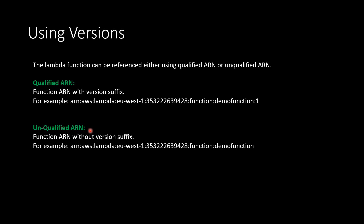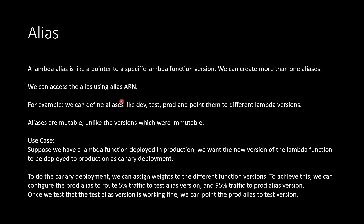Now the question is: what is the use of a Lambda version? The use of Lambda versions can be better understood when we see what Lambda aliases are. A Lambda alias is like a pointer to a specific Lambda function version. We can create more than one alias and access each alias using its alias ARN. For example, we can define aliases like dev and prod and point them to different Lambda versions. Aliases are mutable, unlike versions which are immutable.